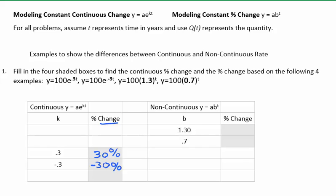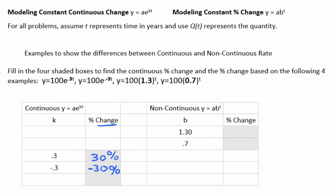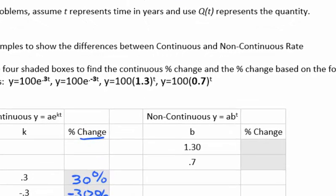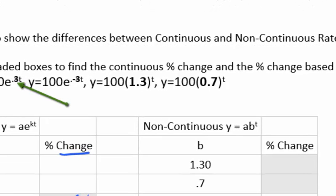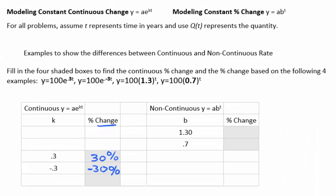Generally, you need not construct a convoluted table. To tell the continuous growth rate, look at the k value and move the decimal over twice. If k is positive, you have growth. If k is negative, you have decline.